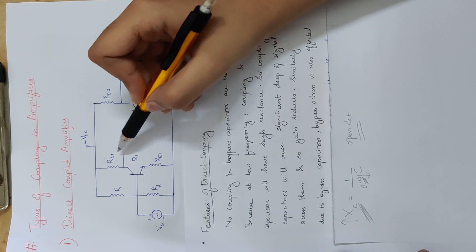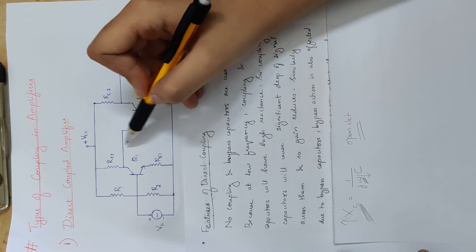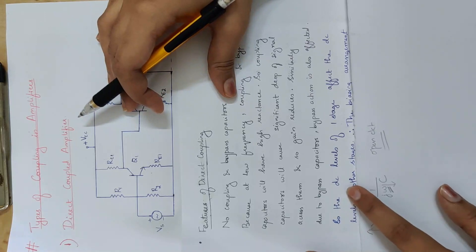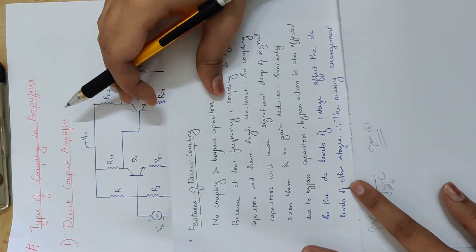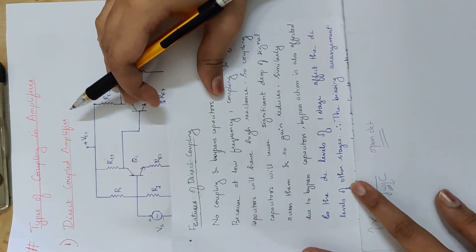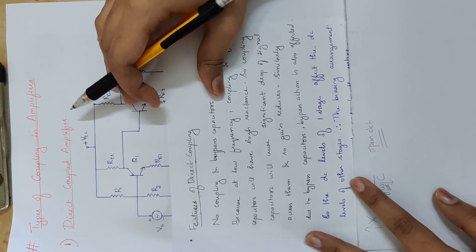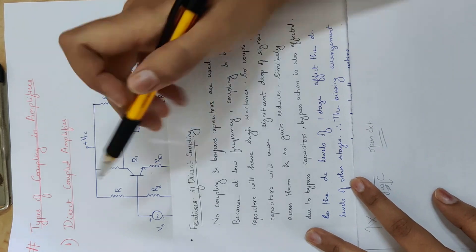An advantage of coupling capacitors is that they allow AC but block DC. By blocking DC, the DC biasing of the next transistor is not affected. However, if no coupling capacitor is used — as in direct coupling — the DC levels of one stage will affect the DC levels of the other stage.